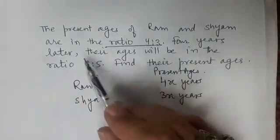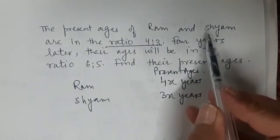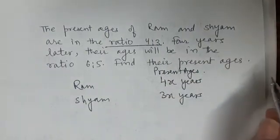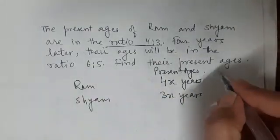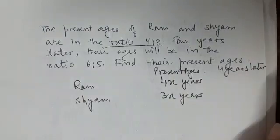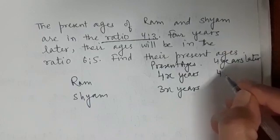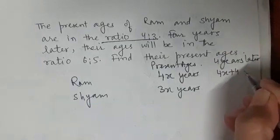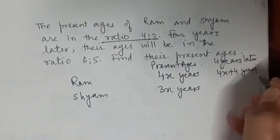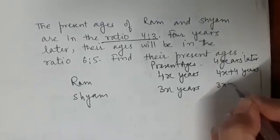Now four years later, so here I am writing four years later. After four years what will be Ram's age? Ram's age will be 4x plus 4 years and Sham's age will be 3x plus 4 years.